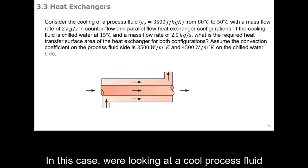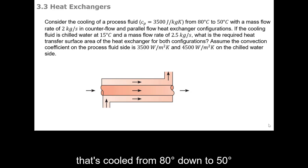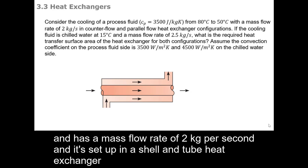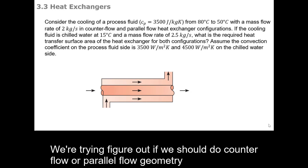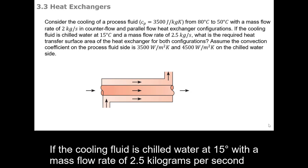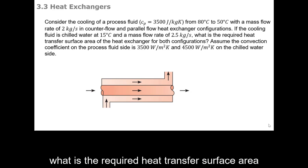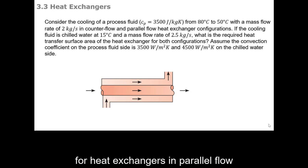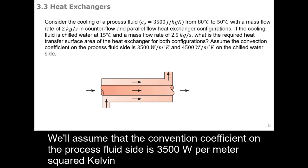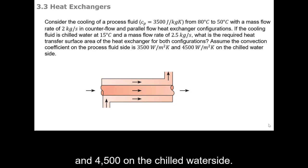In this case we're looking at a cooling process fluid that's cooled from 80 degrees down to 50 degrees. It has a mass flow rate of two kilograms per second and it's set up in a shell and tube heat exchanger. We're trying to figure out if we should do counter flow or parallel flow geometries. If the cooling fluid is chilled water at 15 degrees with a mass flow rate of two and a half kilograms per second, what is the required heat transfer surface area for heat exchangers in parallel flow and in counter flow? We'll assume that the convection coefficient on the process fluid side is 3500 watts per meter squared Kelvin and 4500 on the chilled water side.